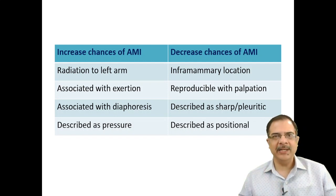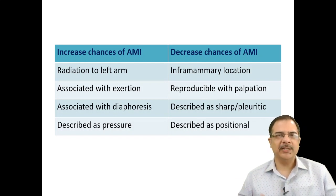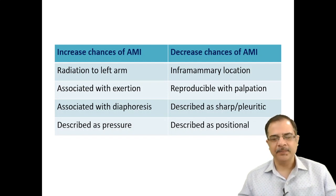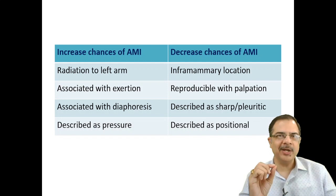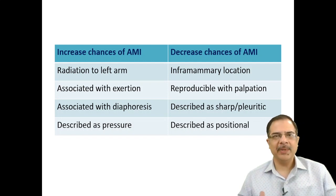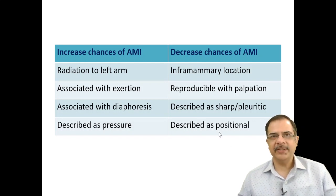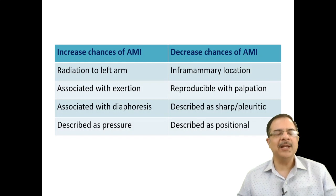Points that go against acute MI include an inframammary location of the pain, pain reproducible with palpation — which is typically musculoskeletal or costochondritis — pain described as sharp or pleuritic (sharp like a needle; pleuritic meaning it increases with respiratory phases or deep inspiration), and postural variation in the pain.